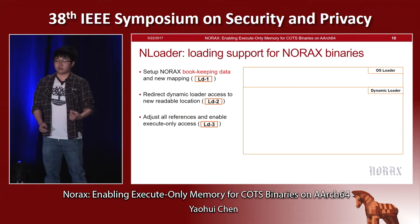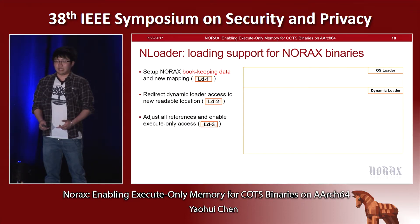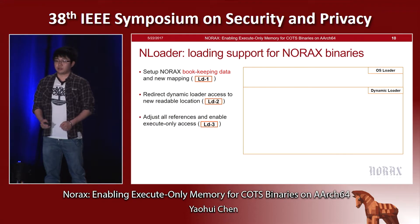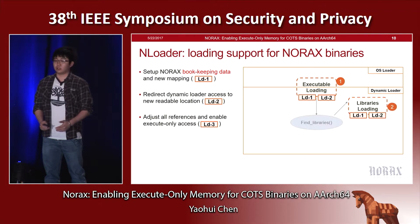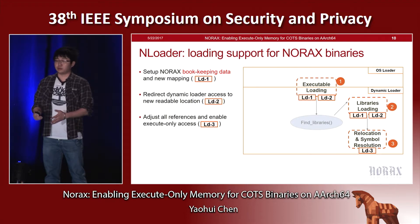During load time, Unloader performs three subtasks: LD1, LD2, and LD3. In LD1, it sets up the NURX bookkeeping data and maps the executable data to the new location. In LD2, it redirects all dynamic loader accesses to the new readable location by updating the dynamic section. In LD3, it adjusts all references and enables XOM on a modular basis. In the loading process, we do LD1 and LD2 for the main binary, then for each dependent library. After all modules are loaded, the dynamic loader performs symbol resolution and relocation, and we do LD3 at this point because some references — for example those from the GOT section — are only available at this time.